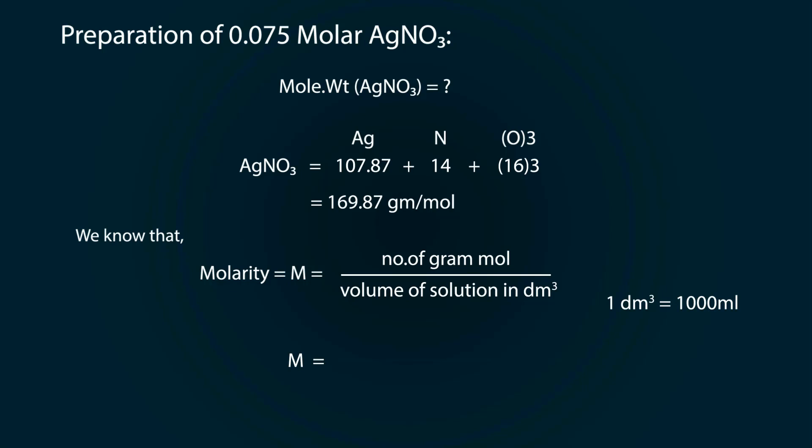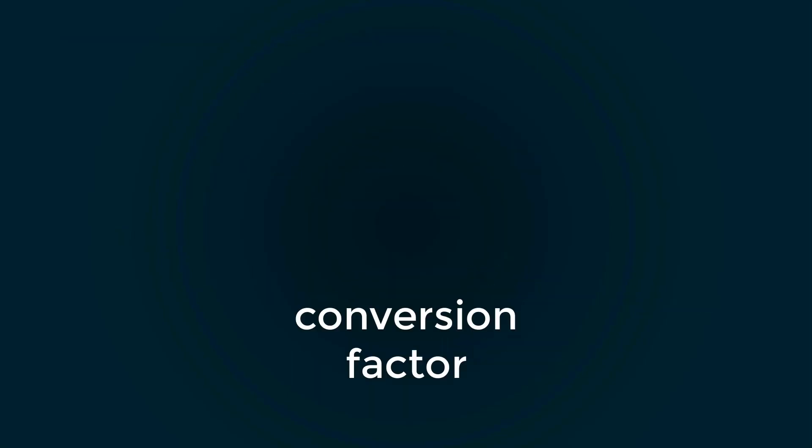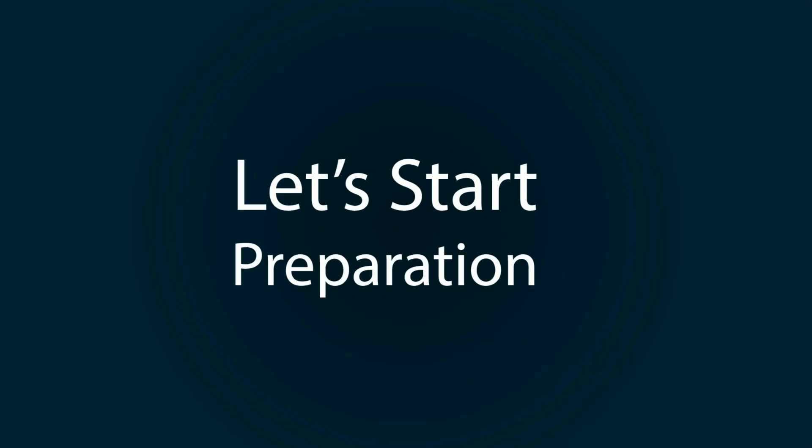So for one molar, we need to dissolve 169.87 grams in 1000 mL distilled water. We know that for one molar we have 169.87. Using a conversion factor, we multiply 0.075 on both sides, so we have 12.74 grams. Let's start preparation.